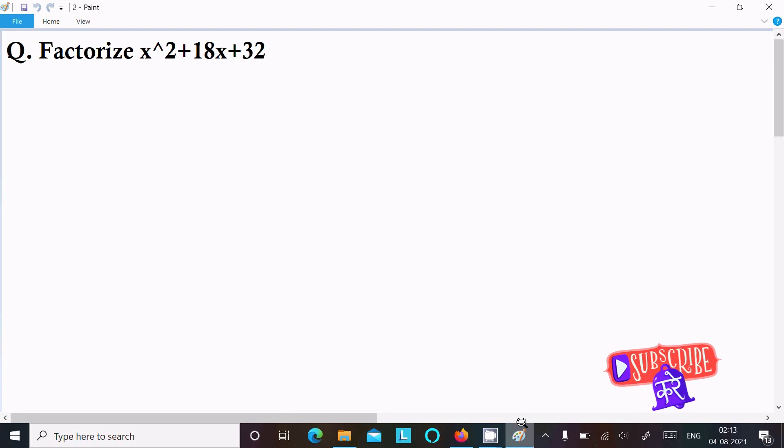In this video lecture I am going to factorize x squared plus 18x plus 32. Let's see the answer. So here, writing the given expression: x squared plus 18x plus 32.